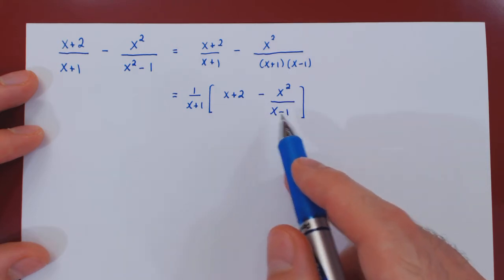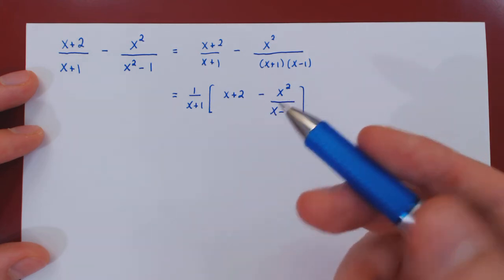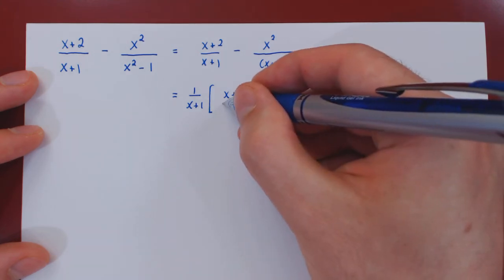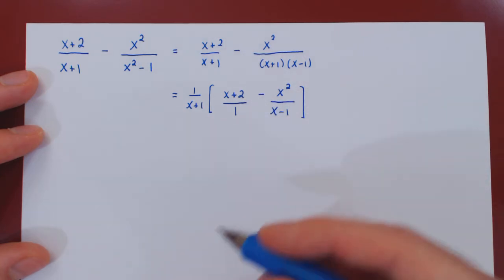Well, there are clearly no longer any common factors between the two terms, so now we can cross multiply and put on a common denominator.